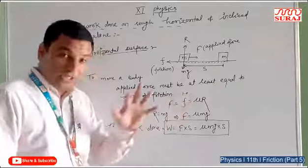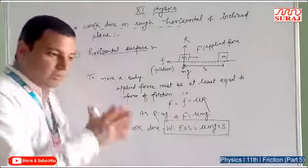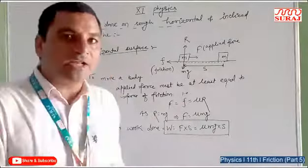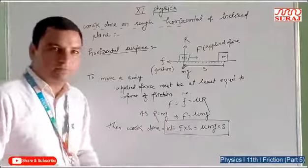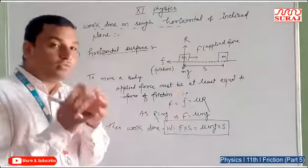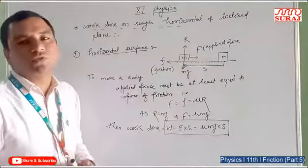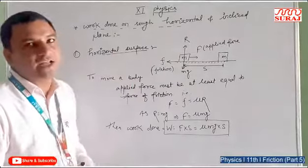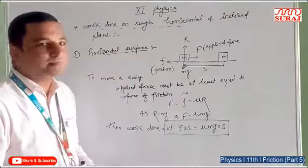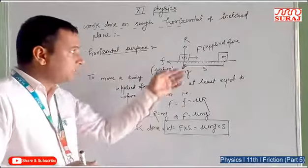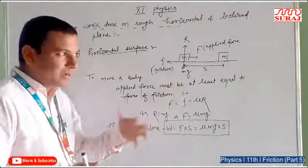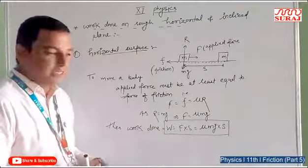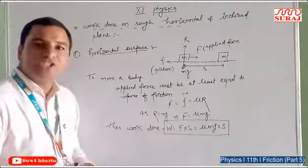By the law of limiting friction, the force of friction and normal reaction are directly proportional. So F is equal to μR, where μ is the coefficient of friction between the surfaces of the two bodies, which depends upon the nature of the material. From the diagram, R is equal to mg, since the body is in equilibrium perpendicular to the surface.